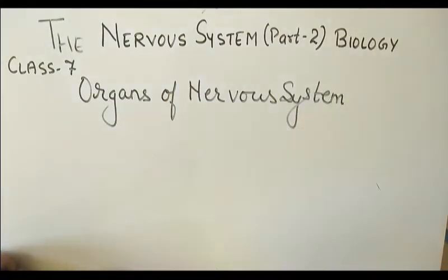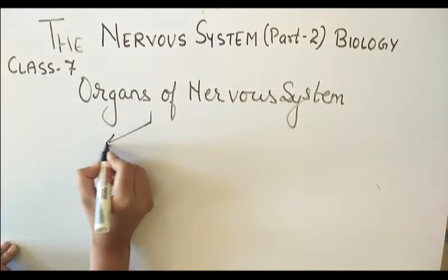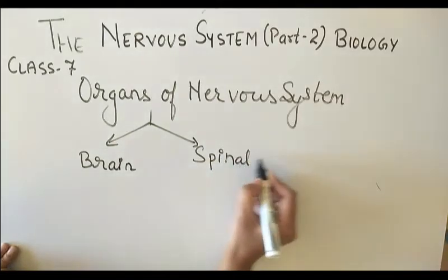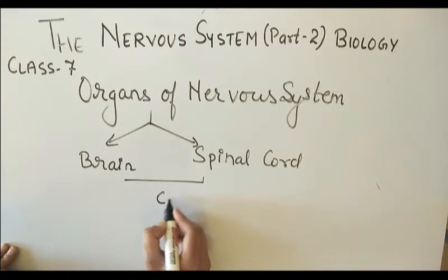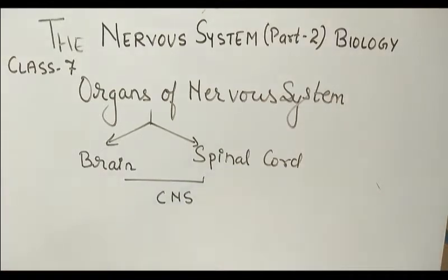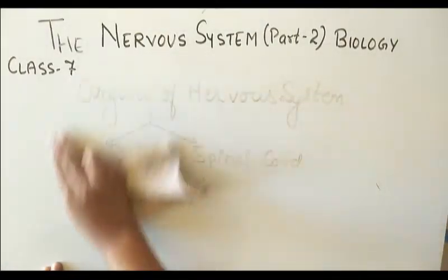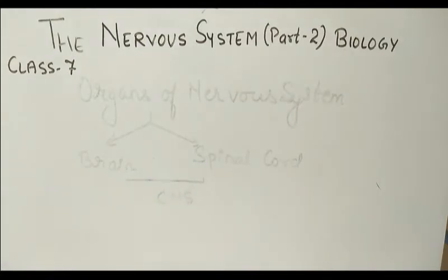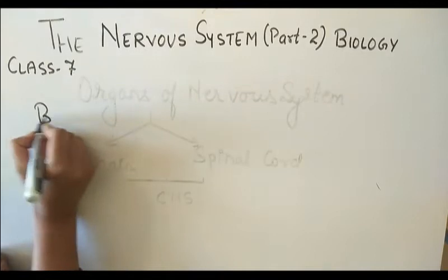When we discuss about the organs of the nervous system, two main organs make up the central nervous system: the brain and the spinal cord. These both make the central nervous system, also known as the CNS. The role of the CNS is that it is connected to various parts of the body through the nerves. So we have to study about the brain as well as the spinal cord.